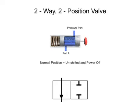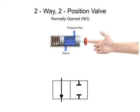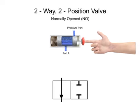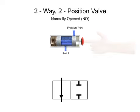The terms normally open and normally closed are used to describe the condition of a valve when it is in the normal position. For this valve, the normal position is position one, which allows unrestricted fluid flow through the open ports. Therefore, this valve is a normally open valve. Additionally, this valve is a spring return valve, meaning that after it is actuated, a spring returns the spool to the normal position.